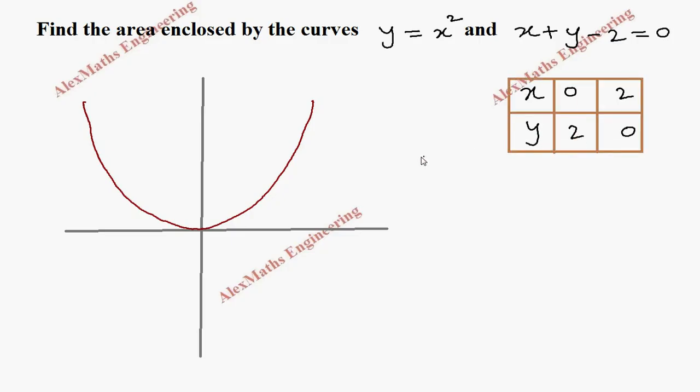One point is (0, 2), so 0, 2 will be somewhere here, and (2, 0) will be somewhere here. This is (0, 2) and another is (2, 0). If we join this, we get a straight line and we extend on both sides, and we extend this parabola to get the closed region.